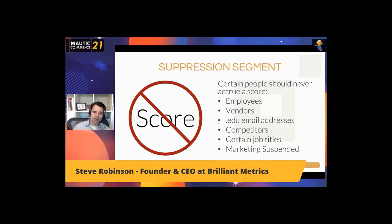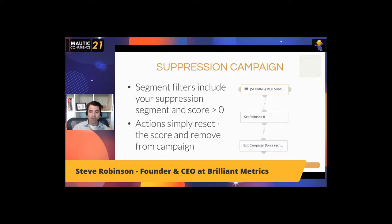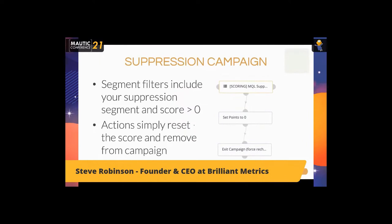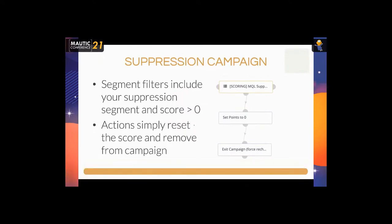If you've got a good lead scoring model and a suppression segment in place, it's not enough just to prevent those alerts. You also want to reset the scores for anybody in that suppression segment. You do that through a suppression campaign — a campaign that runs on a loop. It looks for anybody on your suppression list with a score greater than zero, then resets their score to zero. They drop out of the segment and fall out of the campaign. It runs in an endless loop in the background until everybody who shouldn't be scored has a score of zero.